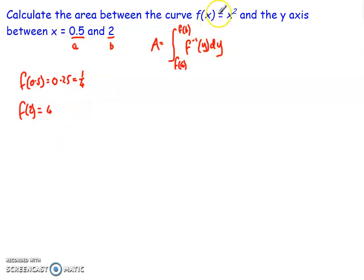What I now have to do is find the inverse of this function. So if I take y equals x squared, that can be rewritten as x equals the inverse f^(-1)(y), which is going to be the square root of y. Now for the fact I'm going to do integration, I'm going to write it as y to the power of a half. So my area is equal to the integral from a quarter to 4 of y to the power of a half dy.